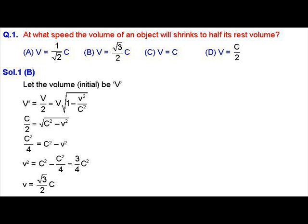So volume V equals V₀ square root of 1 minus v² by c². The apparent volume is half of rest volume, which implies V/2 equals V₀ square root of 1 minus v² by c².